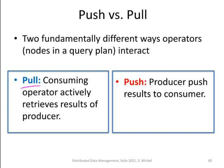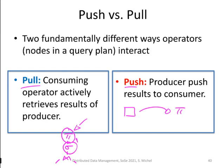On the left side we have a description of the pull model, the traditional model used in database systems. Here, the consuming operator retrieves results from producing operators — for instance, a projection operator, a selection operator, and a join operator. The application pulls at the topmost operator, which sends the pull request down to the selection operator, and tuples are pulled from the relations up through the individual operators. In the push model, it is different: sensor nodes produce data and actively push it to operators like a projection, which applies a projection and pushes results further to a selection operator. This is a reverted model compared to the pull model.